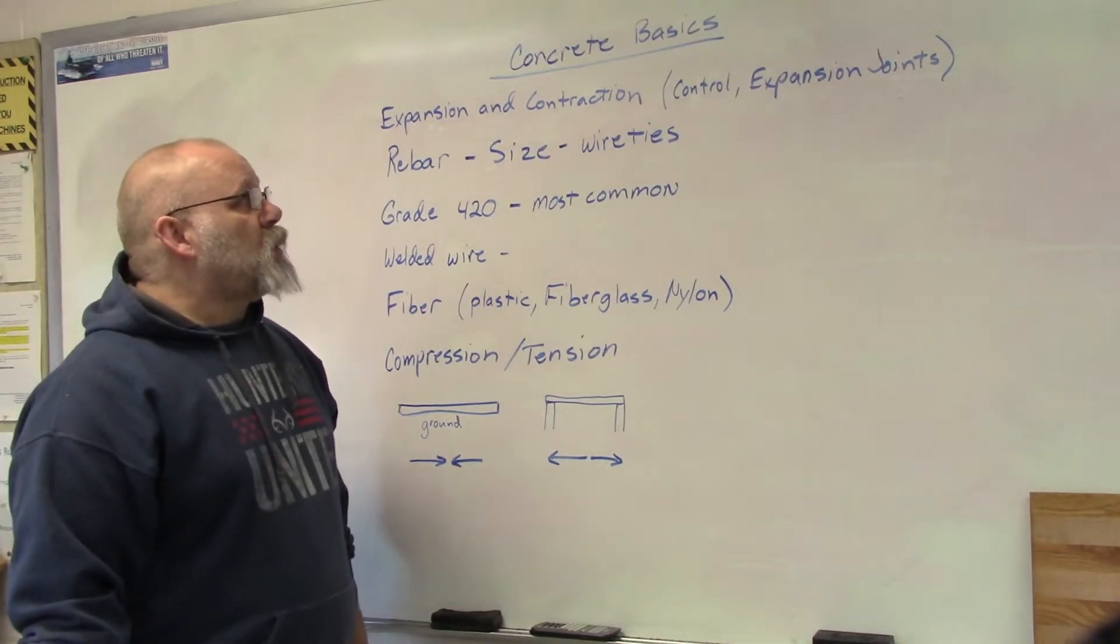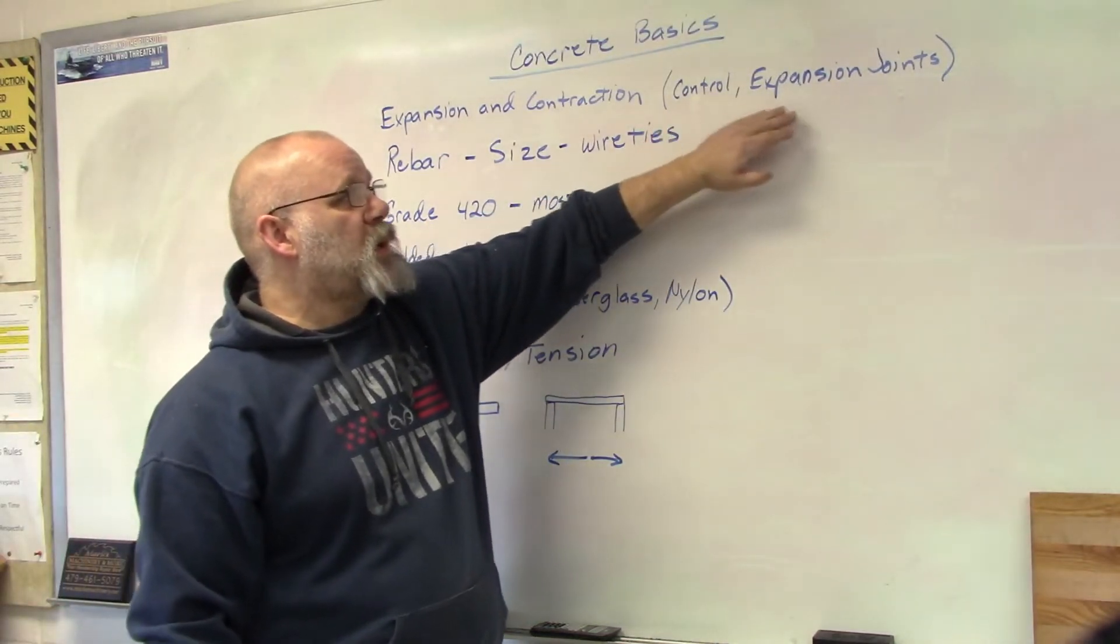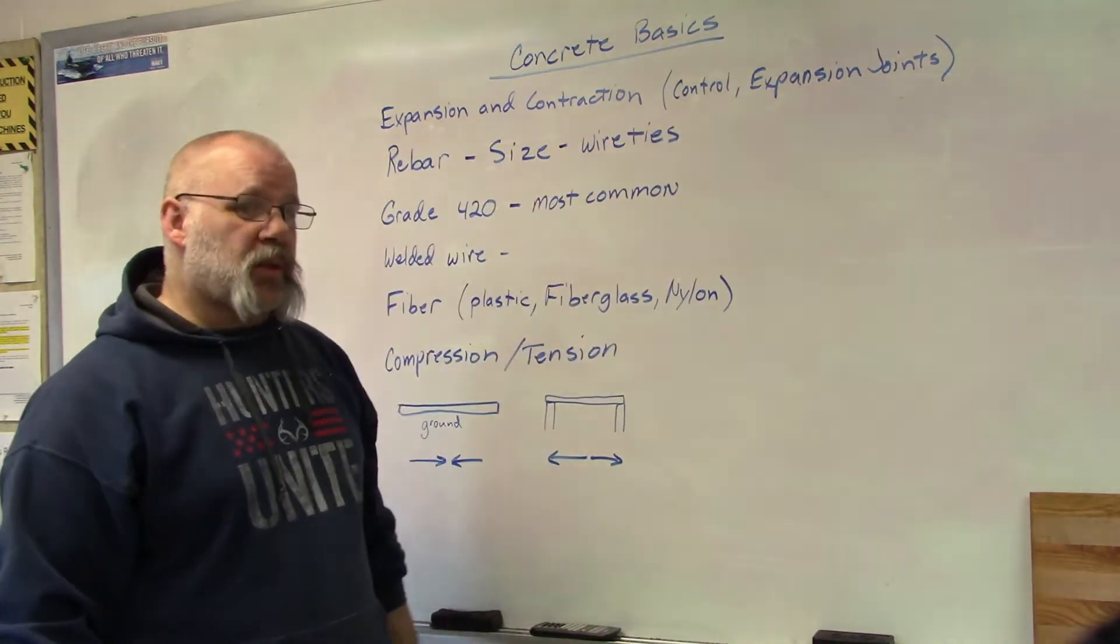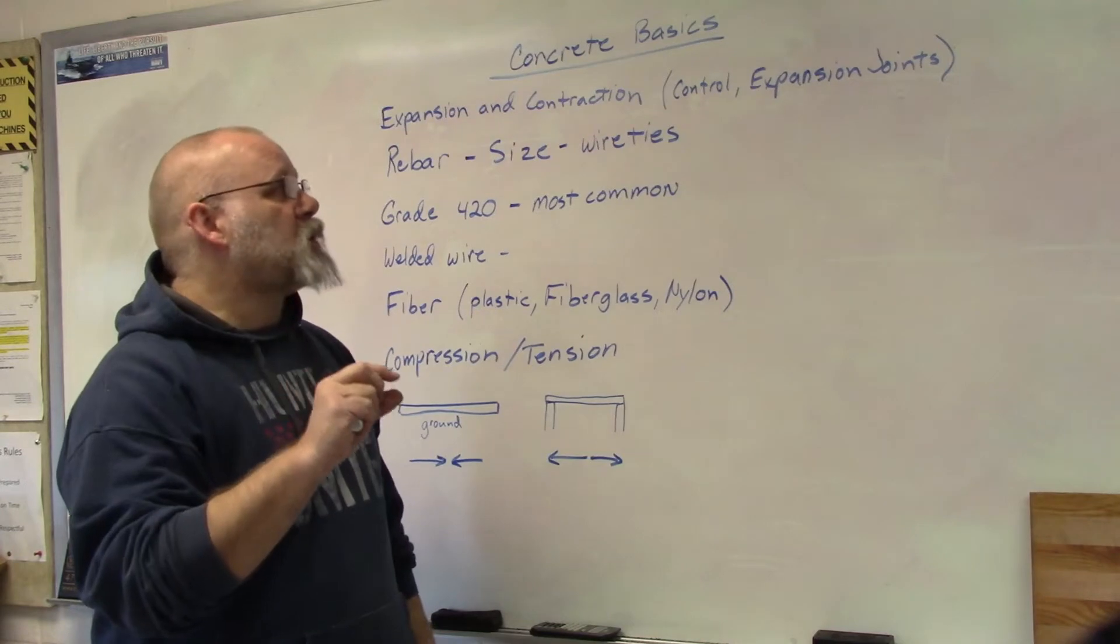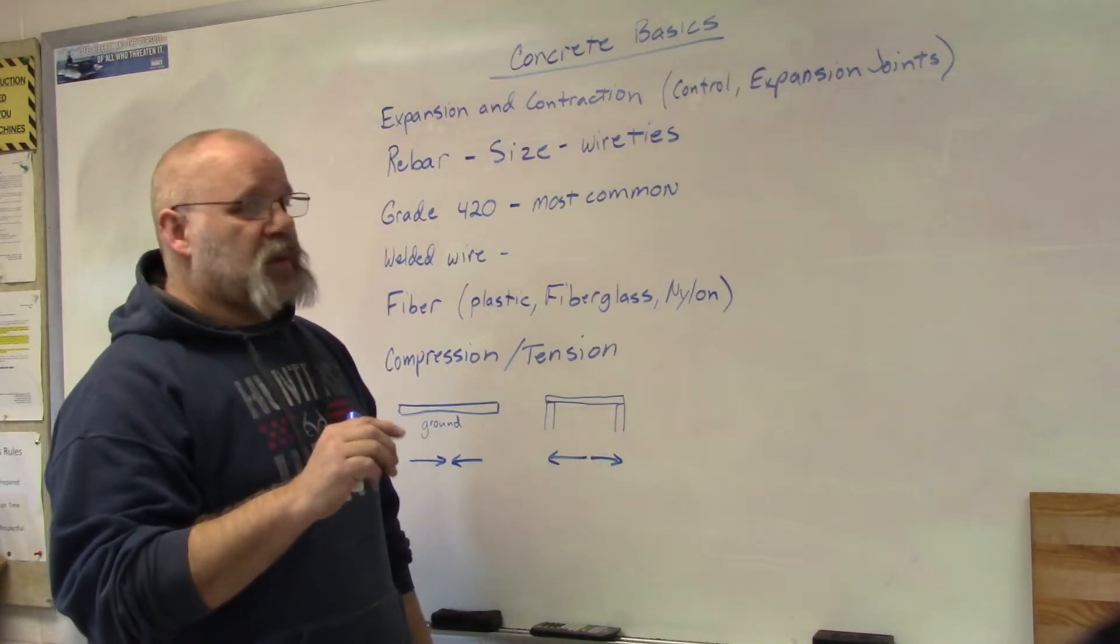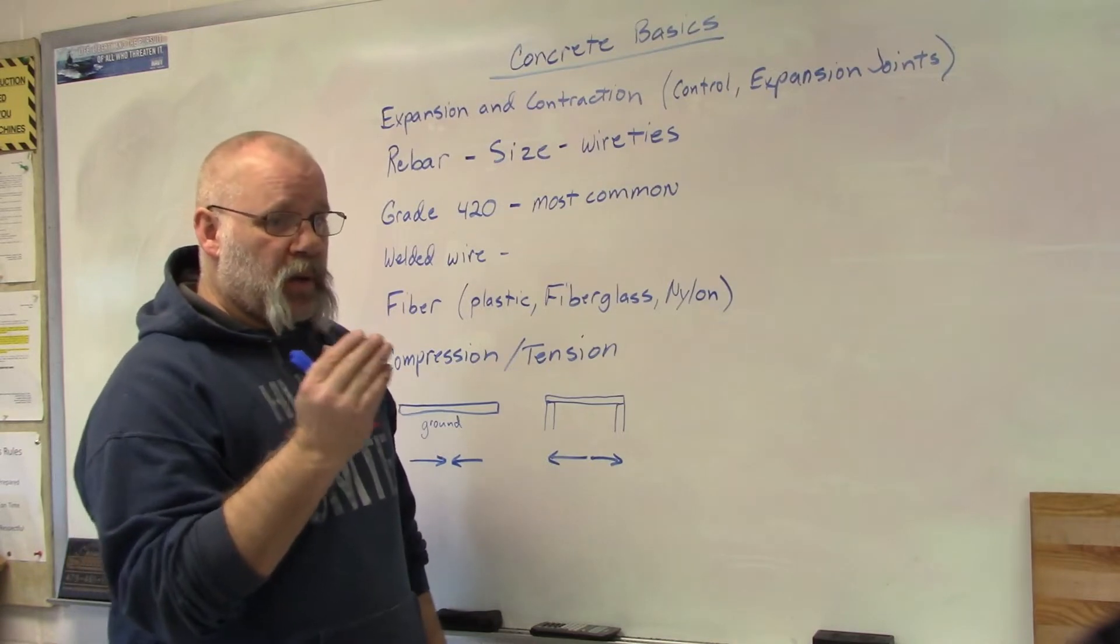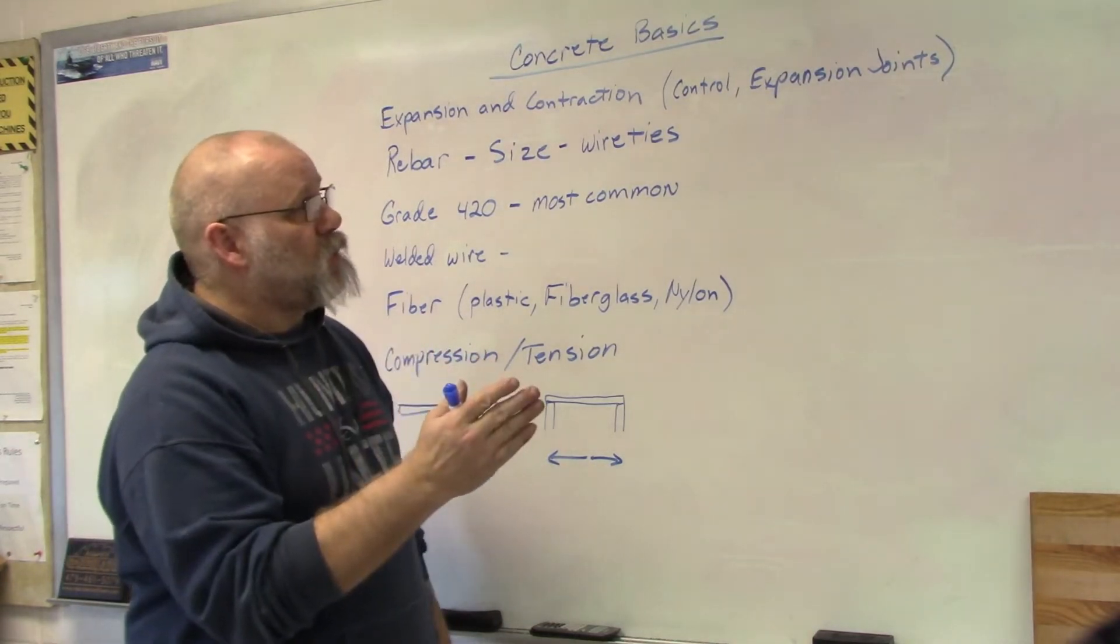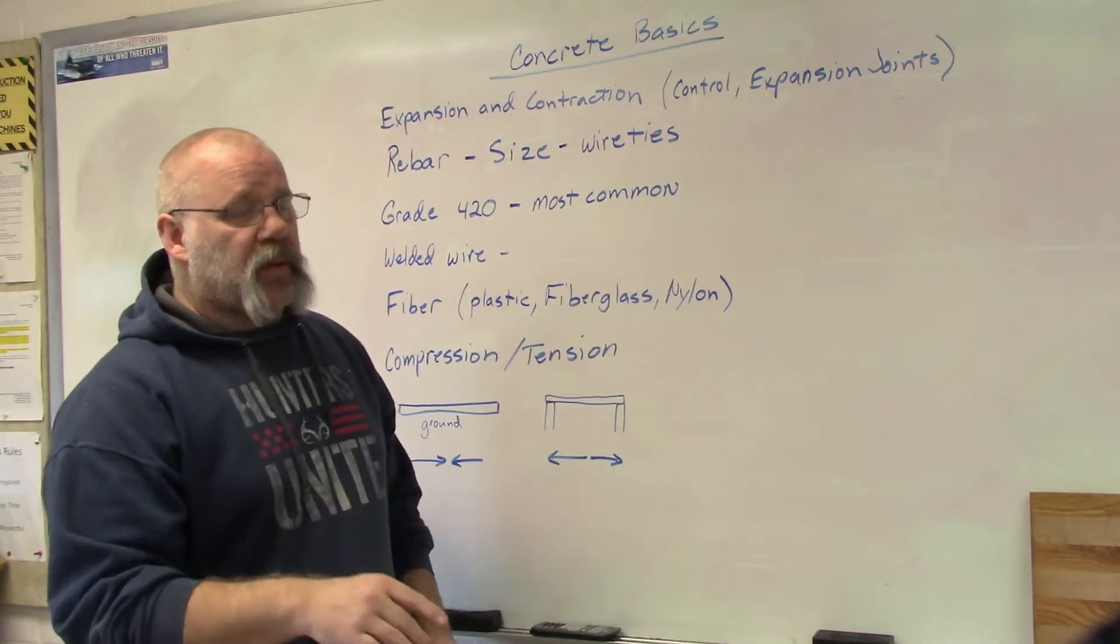And to control that, we put two types of joints. There's control joints and there's expansion joints. A control joint is a joint that is just cut to a certain depth, half inch, one inch. And what that does is if your concrete cracks, then the crack will run along that control joint that you put in there and it won't be visible on the surface of the concrete.